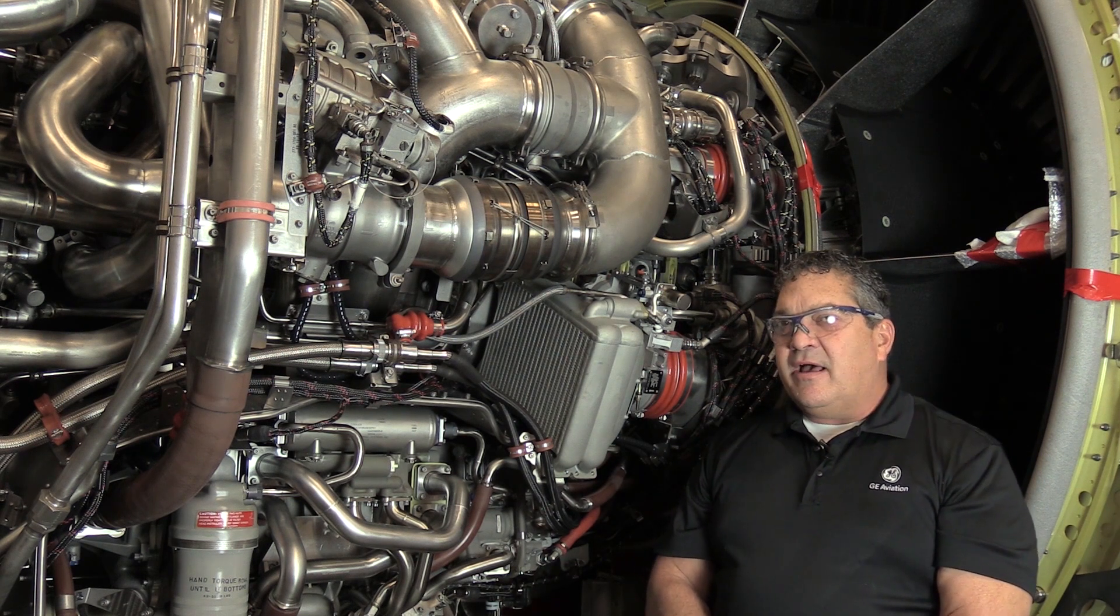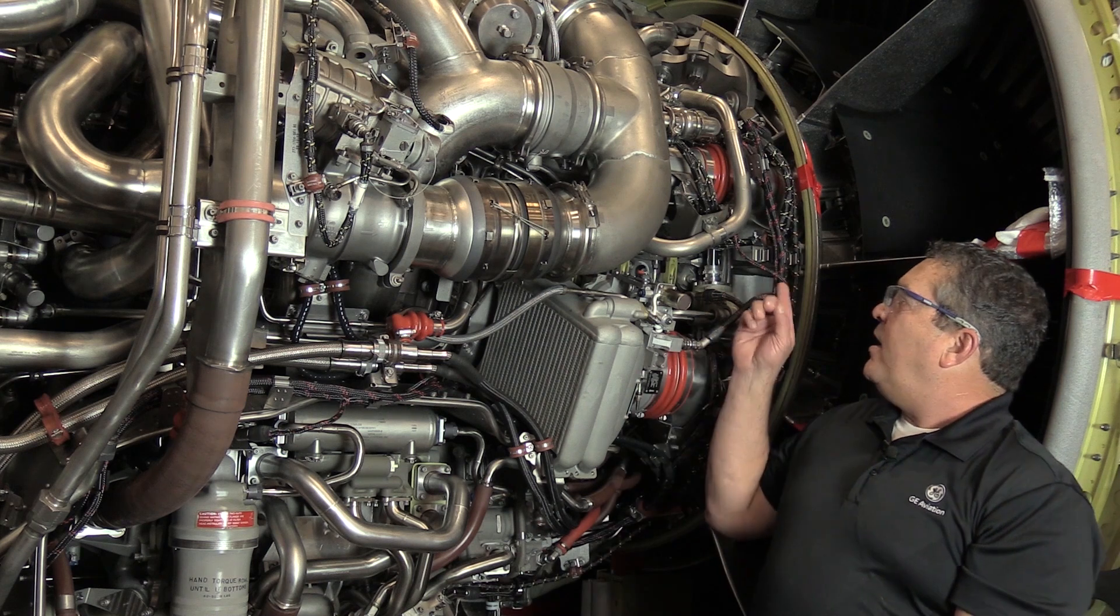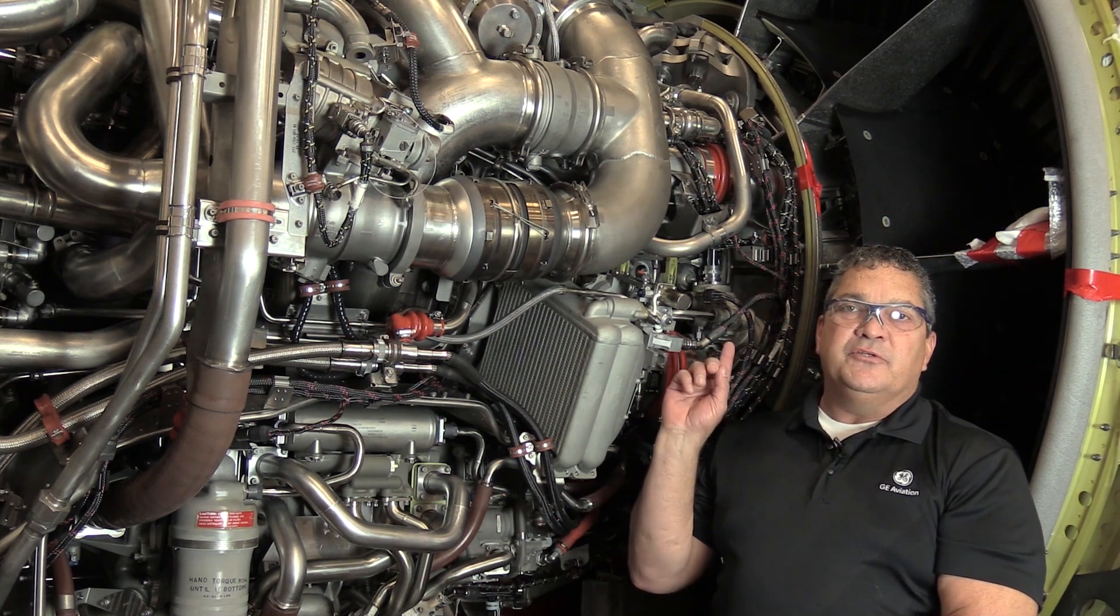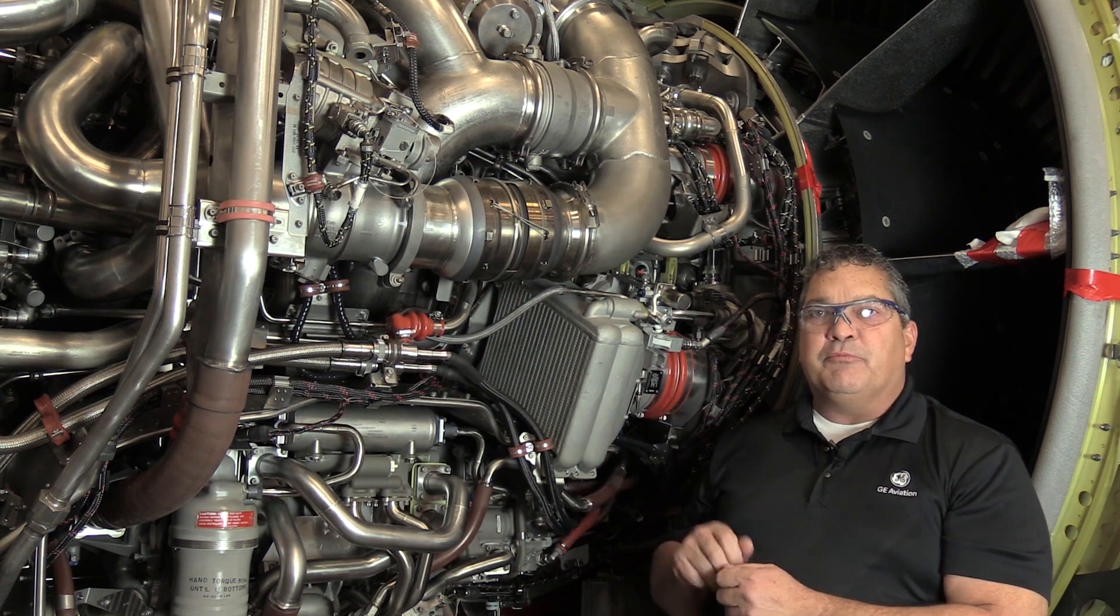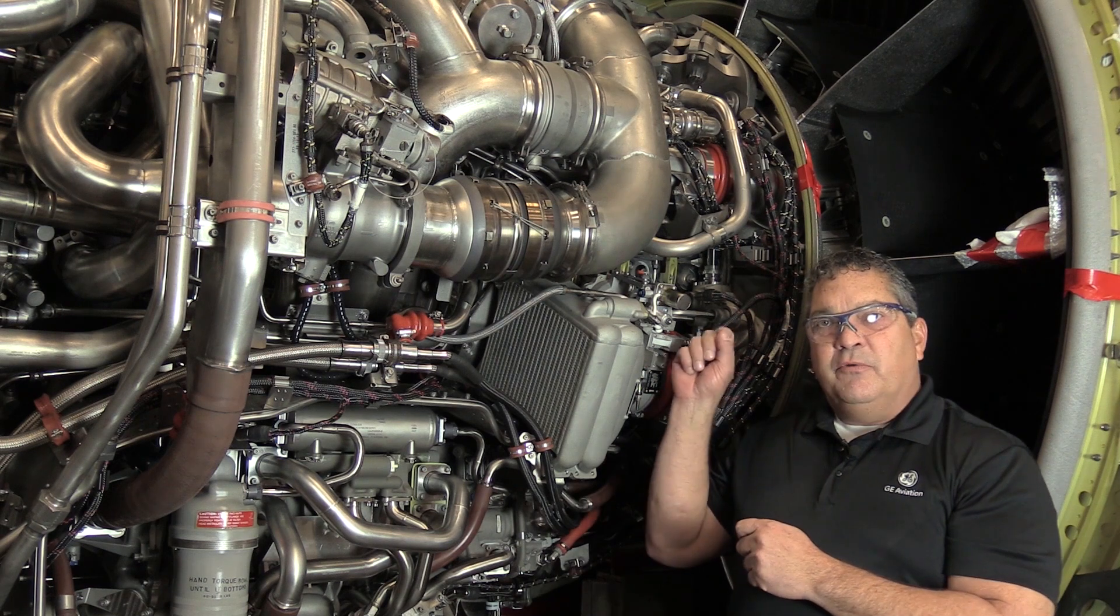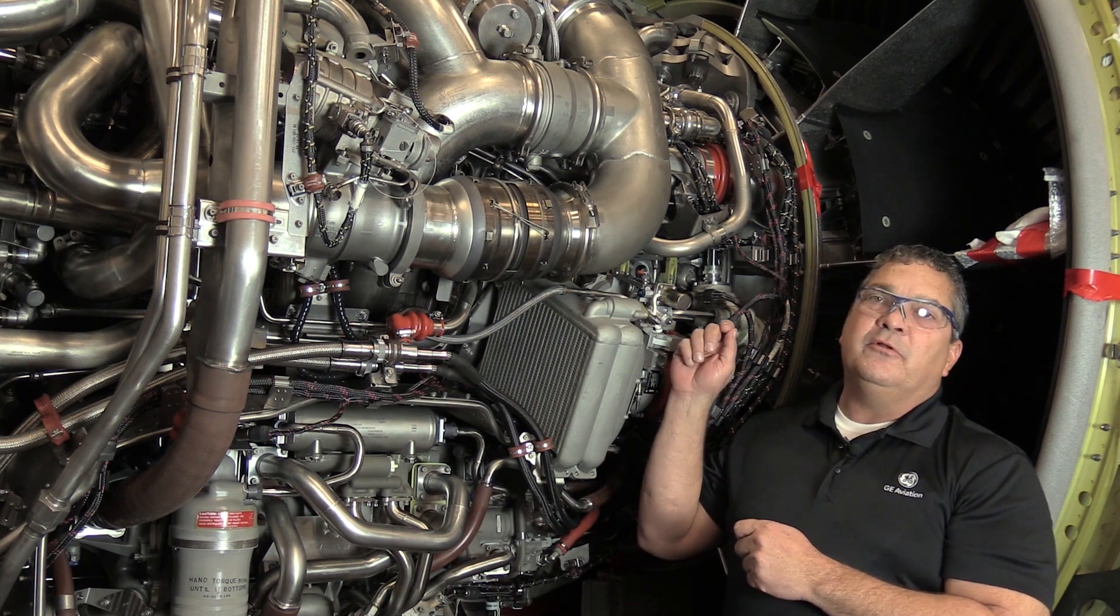That service bulletin has us periodically re-lubricate the rod ends of the variable stator vane actuators on either side of the engine. Not terribly difficult, but we have discovered some best practices to ensure a more thorough lubrication of the ball within the rod end, and that's what we're going to look at today.